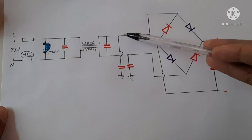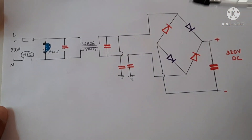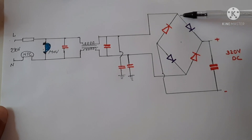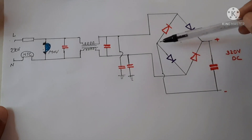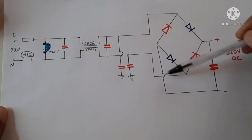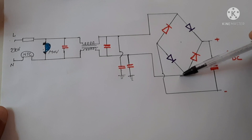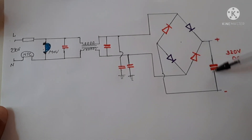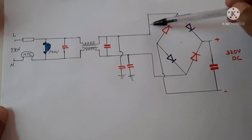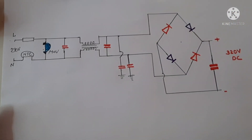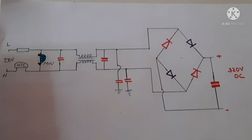After rectification we will get around 320 volts DC at the output. When the positive cycle of the 230 volt input comes, this diode will conduct and current will flow through this path, through this capacitor, through this diode to the negative side. When the other side becomes positive, current flows through this diode, through this capacitor, to the negative side. So we get around 320 volt DC.